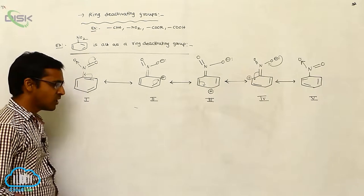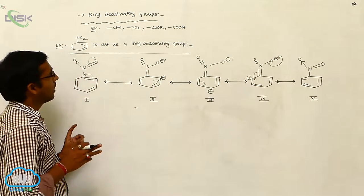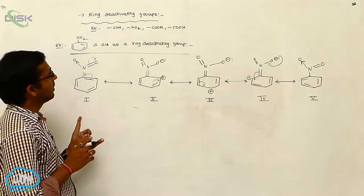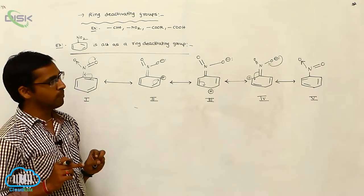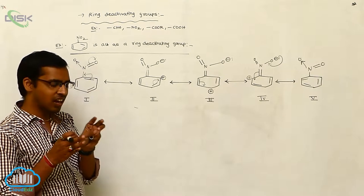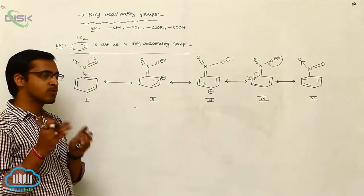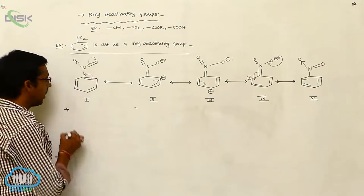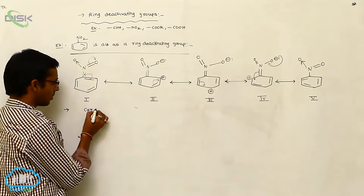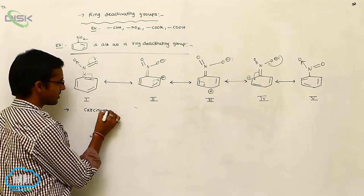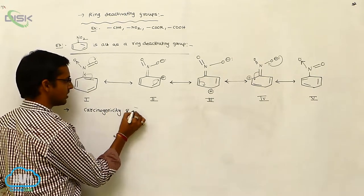This is the directing influence of ring activity groups on mono-substituted benzene, or the factors influencing the groups attacking on mono-substituted benzene. Next, carcinogenicity and toxicity.